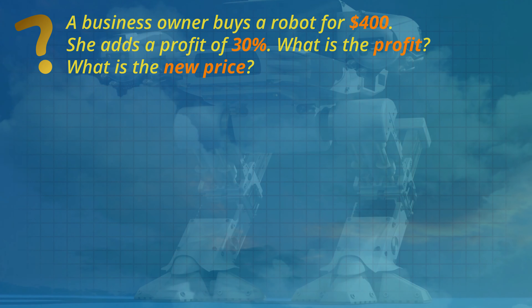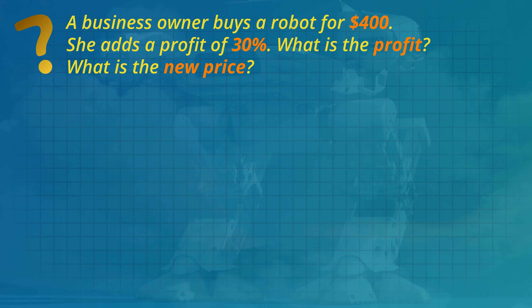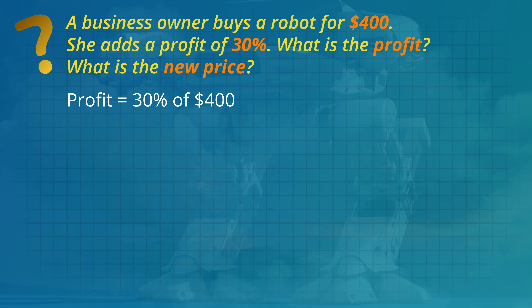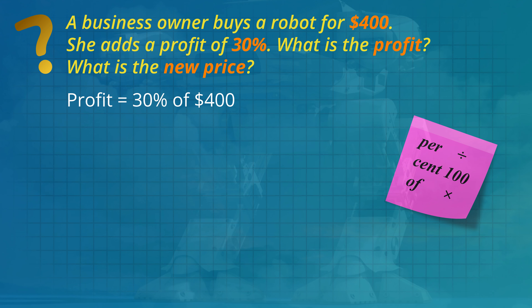A business owner buys this robot for $400. She adds a profit of 30%. What is the profit and what is the new price? With percentages, per means divide, cent means 100, and of means multiply. So 30% of 400 is 30 divided by 100 multiplied by 400.